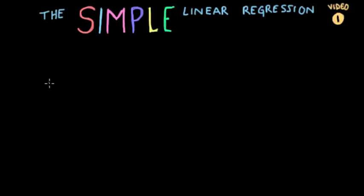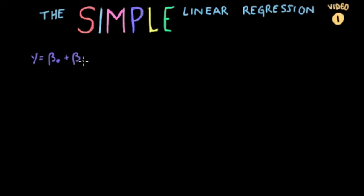We're going to touch on the differences between the population and sample regressions, discuss interpretation of the model, and what it takes to assume causality. Then we'll discuss residuals and the derivation of our coefficients. In the last video we introduced the simple linear regression model: y equals beta zero plus beta one x plus u.